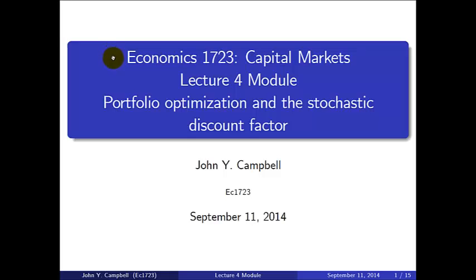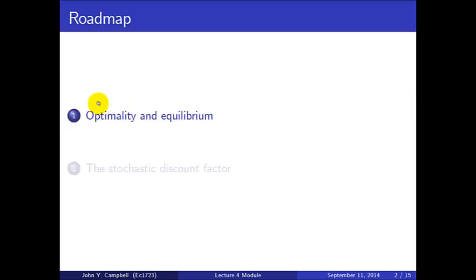Welcome to Economics 1723 Capital Markets, the fourth lecture module which is on Portfolio Optimization and the Stochastic Discount Factor. Today we're going to talk about optimality and equilibrium — two key concepts in finance and economics more broadly — and introduce the Stochastic Discount Factor, which was at the heart of last year's Nobel Prize awarded to three famous finance economists.